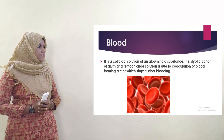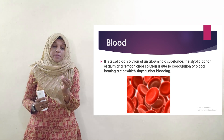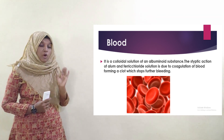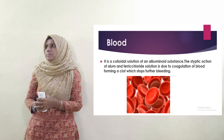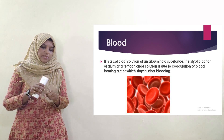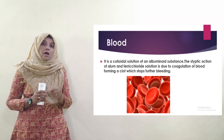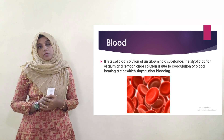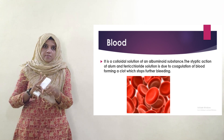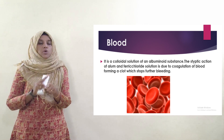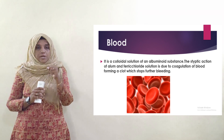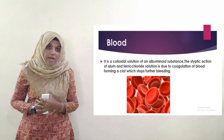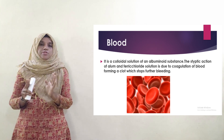Blood is a colloidal solution of albuminoid substances. Coagulation — the blood is clotted. If the blood clots, it is called a blood clot, and the process is called coagulation.